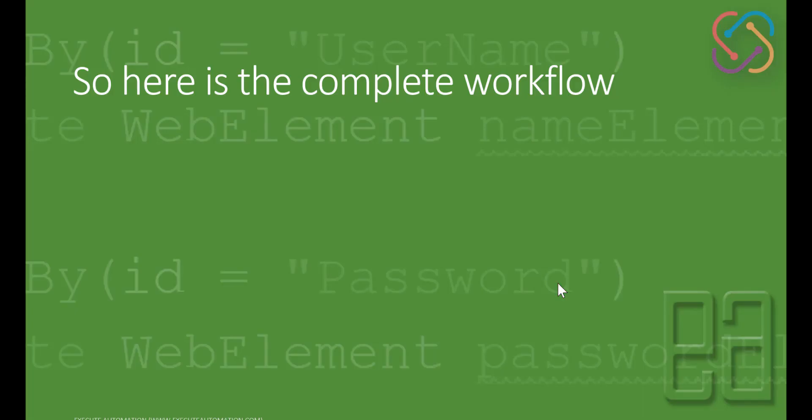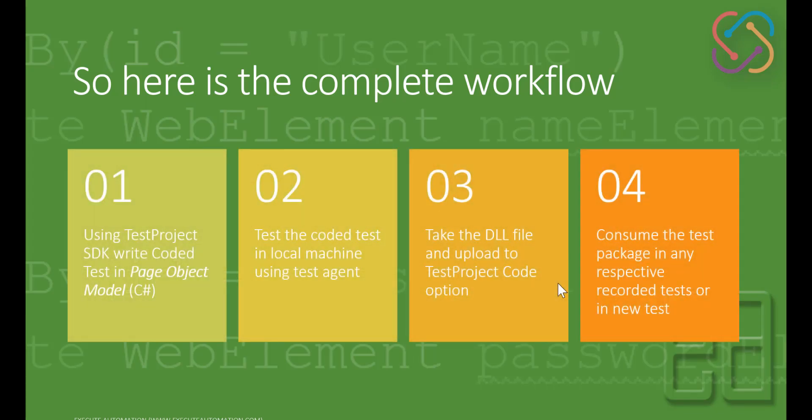Here is the complete workflow for this video: we'll use the test project SDK to write a coded test using a page object model Selenium C-Sharp class, then test it locally using the installed test agent. We'll take the DLL file, upload it to the test project coded options in the portal, and then consume the test package in a recorded test or a new test to see how it executes. Let's see everything in action.